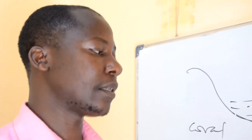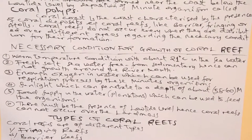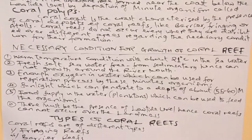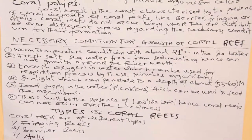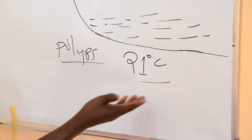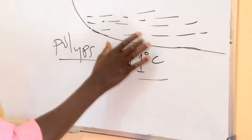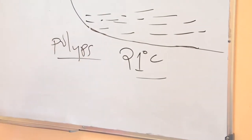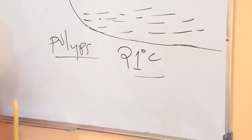Amongst these conditions is warm temperature of about 21 degrees centigrade in the sea water. Dear students, although this organism takes place within water bodies nearby the coast, the temperature of that water body must be 21 degrees centigrade in the sea water for this organism to grow. Unless this condition is met, it will no longer exist. Because wherever the temperature increases or decreases, even that can be harmful to this organism. Therefore, this organism depends on a certain temperature of about 21 degrees centigrade.